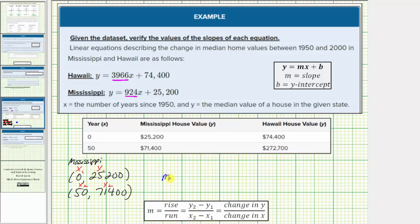So the slope m is equal to y sub 2 minus y sub 1, which is 71,400 minus 25,200, divided by x sub 2 minus x sub 1, which is 50 minus 0. Simplifying, this difference is 46,200 divided by 50, which equals 924, verifying the slope for the equation involving Mississippi.